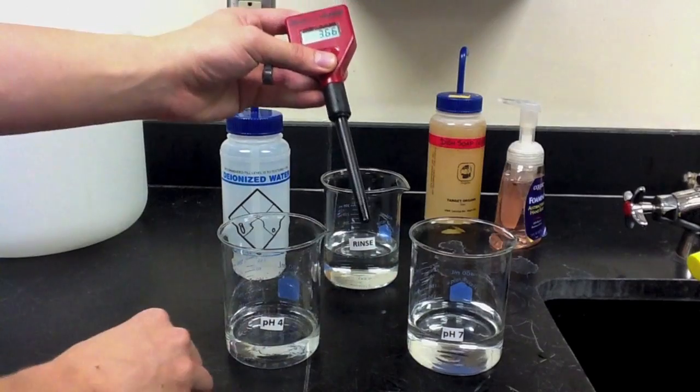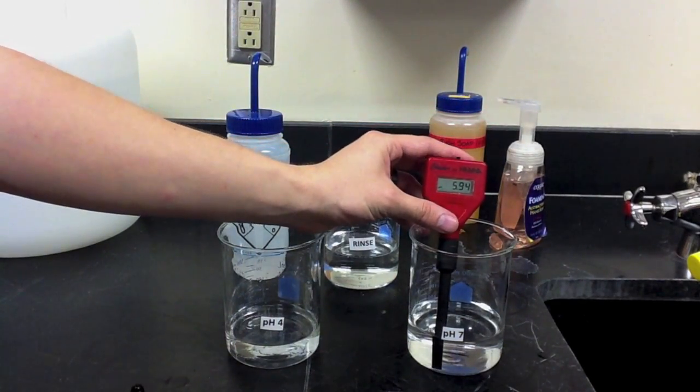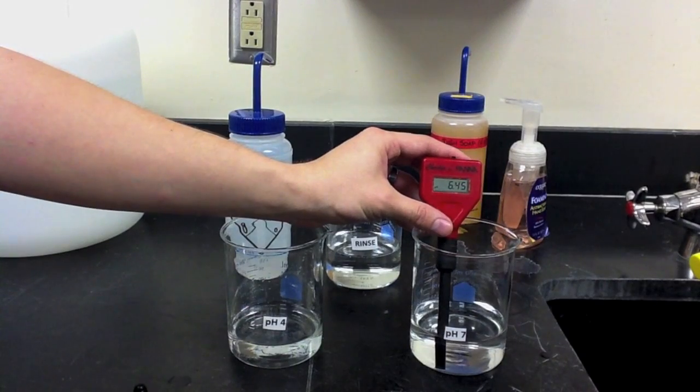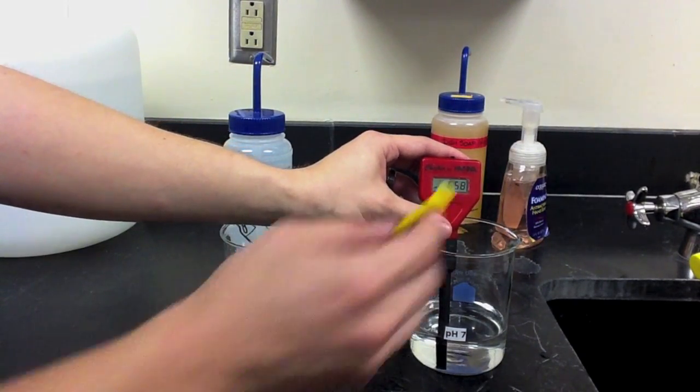Once the electrode is exposed, we can now place it into the pH 7 buffer. Using a screwdriver, we can adjust the pH 7 screw so that the meter is now calibrated to 7.